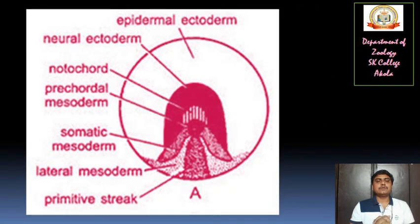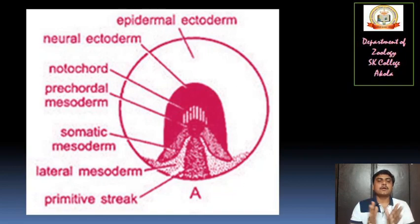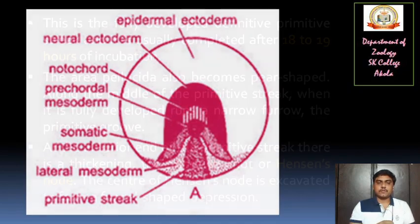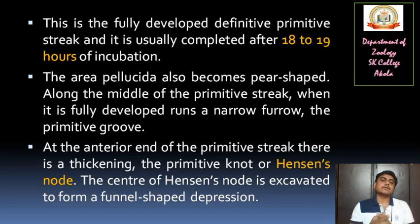In this diagram you are able to see the epidermal ectoderm, neural ectoderm, the notochord now forming, precordal mesoderm, somatic mesoderm, lateral mesoderm, and the primitive streak also getting formed. This is diagram A, where the notochord and mesodermal layers are forming. The fully developed definitive primitive streak is usually completed after 18 to 19 hours of incubation by the hen or in vitro inside the oven.